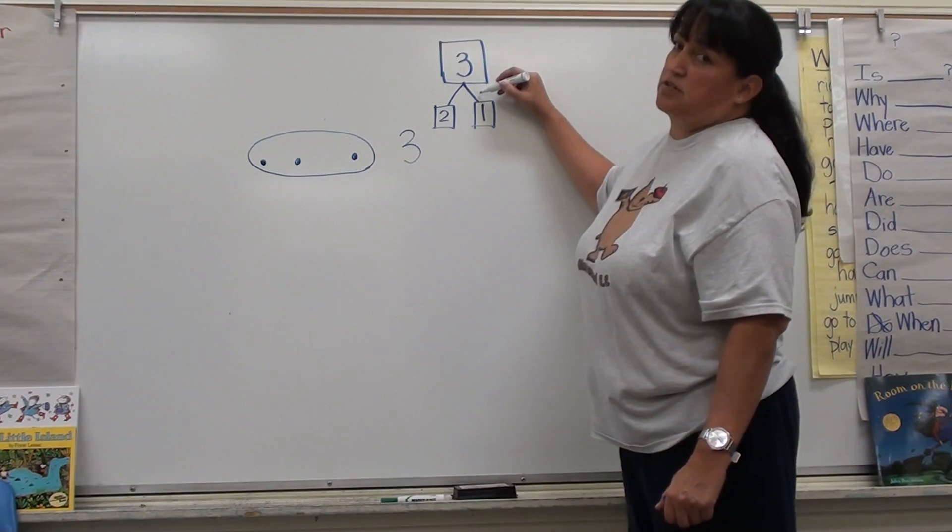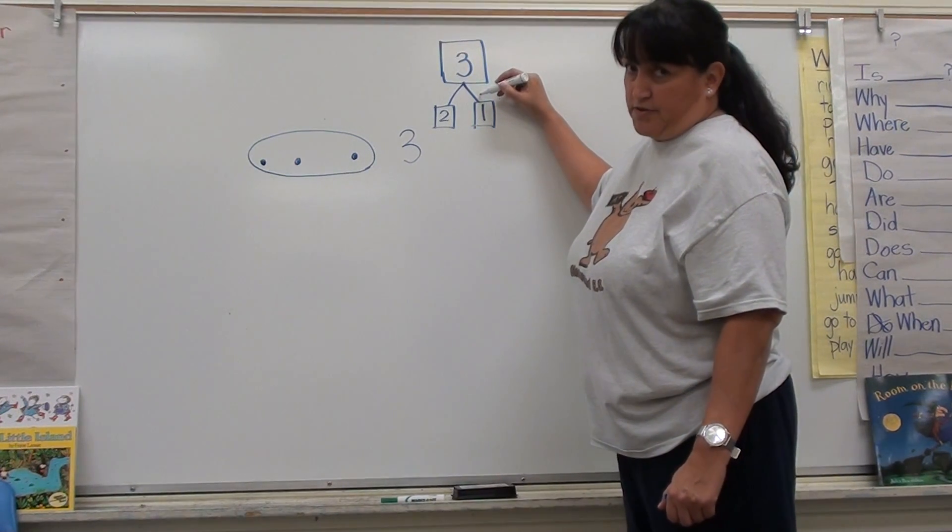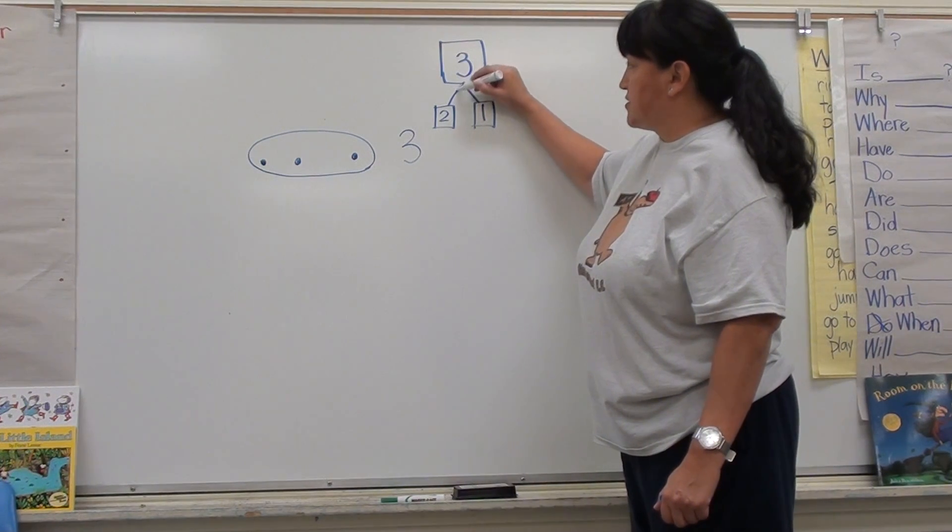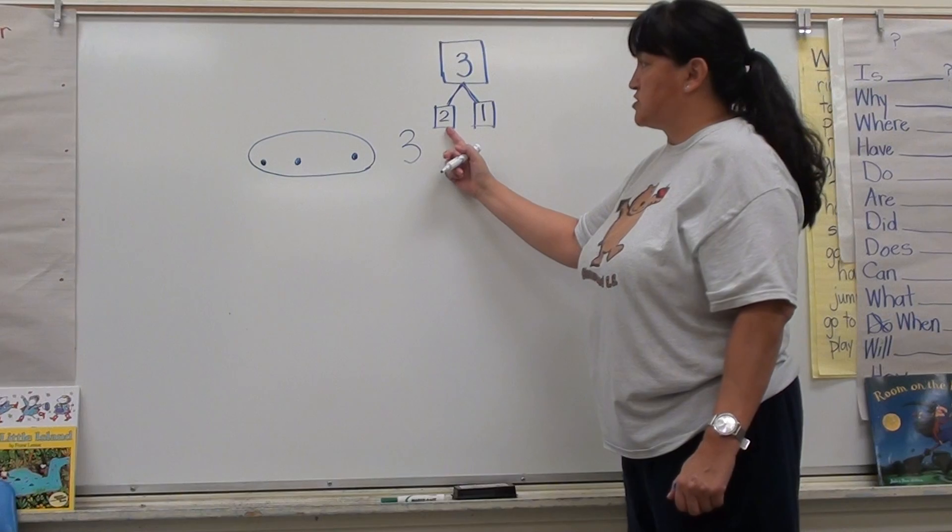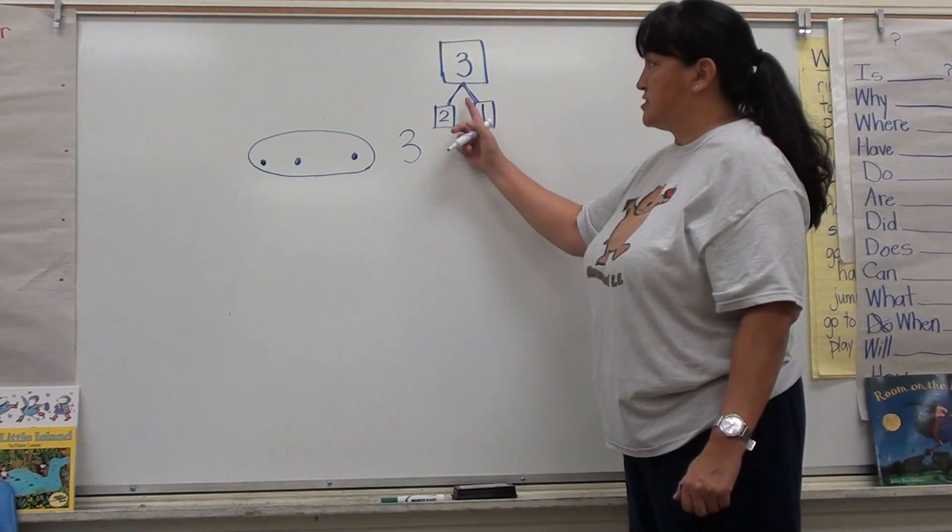This is what makes our number bonds stay together. These lines here. They're connecting the boxes together to bond the two and the one to make a three.